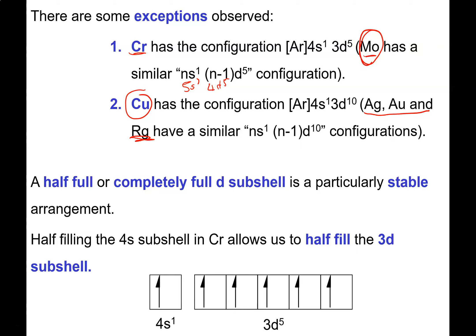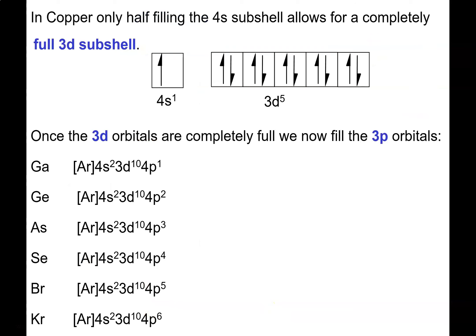Why does it happen? This happens because a half-filled D subshell or a completely filled D subshell is very stable. What's happening in chromium is by half-filling the 4S, that allows the 3D to be completely half-filled with 5 electrons, and that's a very stable arrangement in terms of energy. In copper, by half-filling the 4S, we get an extra electron and that allows us to finish off the D subshell.